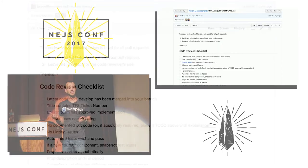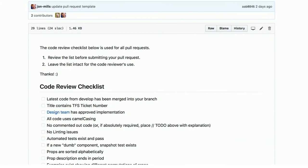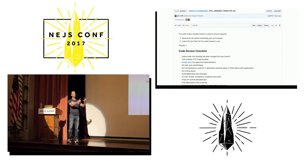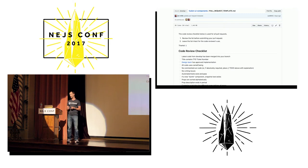On my team, we've honored this checklist idea. We've created a file called pullrequesttemplate.md. Pro tip: if you use GitHub, create a file with this name and every time somebody creates a pull request, it will generate this checklist inside the pull request automatically. All of our pull requests have our code review checklist right there — that's us embracing the checklist manifesto so we don't skip a step.